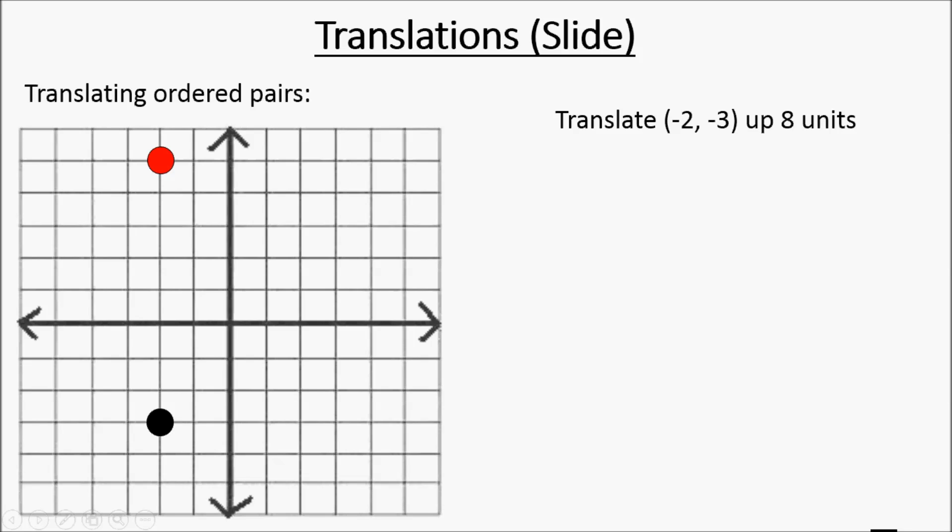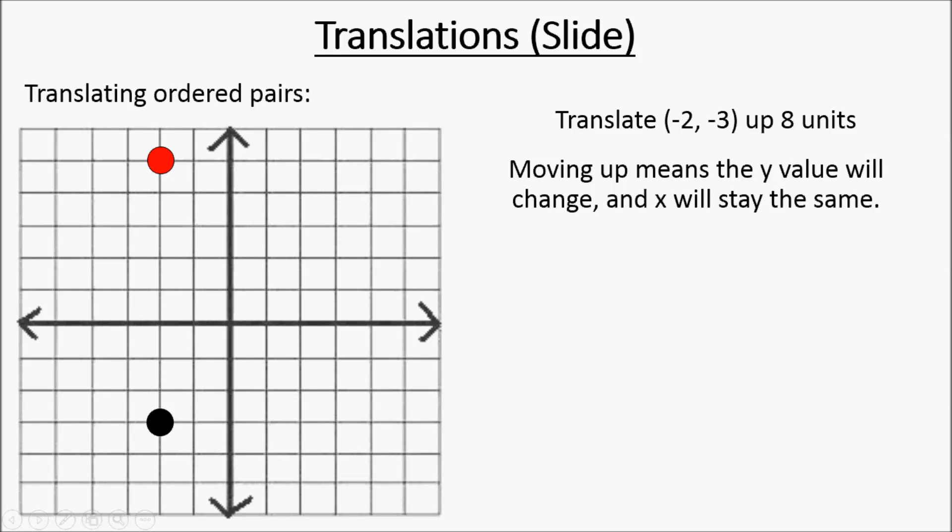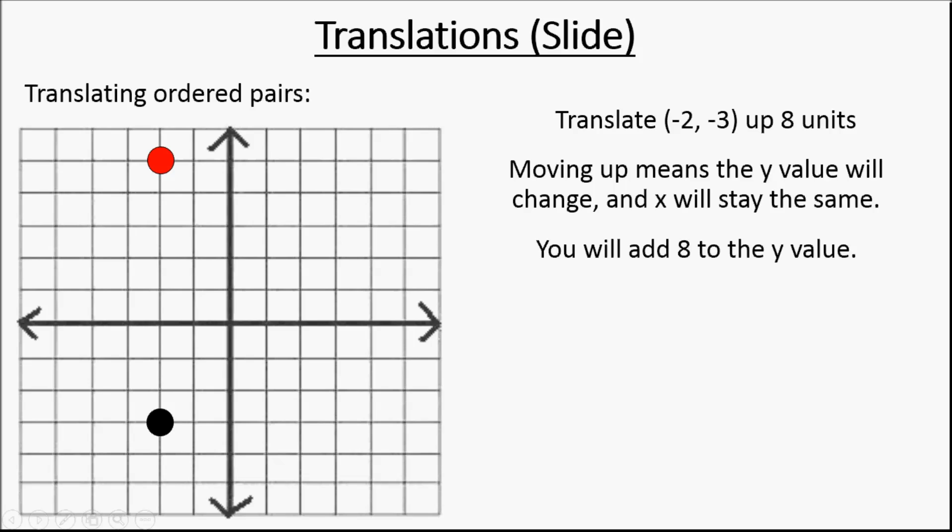This especially comes in handy when you're dealing with larger numbers, such as if we wanted to move one hundred comma negative eighty up a thousand — you don't want to be counting all that out on a graph. So the math trick: when you move a point up, the y-value will change and the x-value will stay the same. Since upward is a positive direction, you're going to be adding eight to the y-value, keeping x as it is.